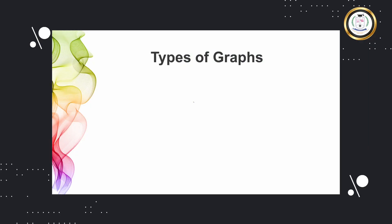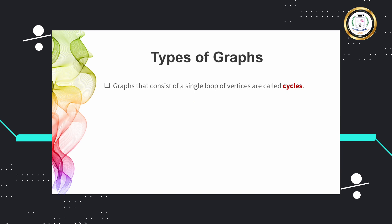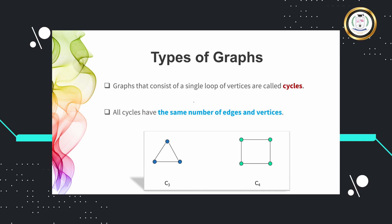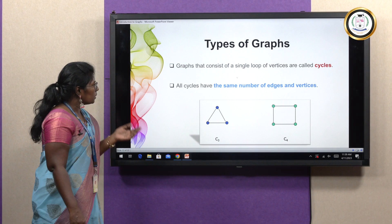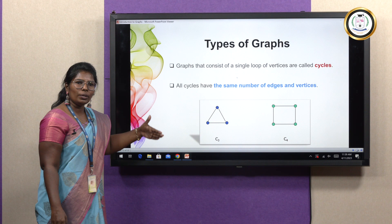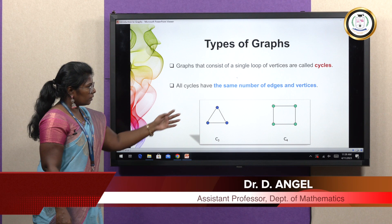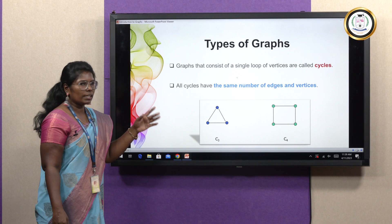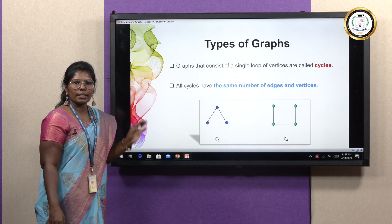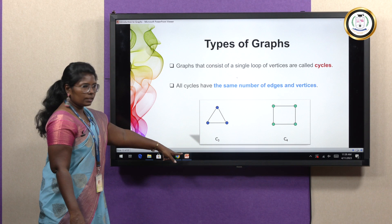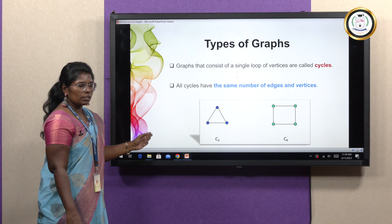The next example is a cycle graph. If we have three vertices and want to construct a cycle graph, we connect all the vertices with a single loop. This is a cycle graph on three vertices, written as C3. If we have four vertices, we get a square, which is the cycle graph on four vertices denoted C4. In general, Cn is a cycle graph on n vertices. Every cycle graph has the same number of edges and vertices, so C3 has three vertices and three edges, C4 has four vertices and four edges, and so on.